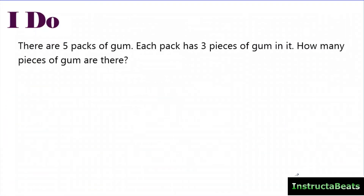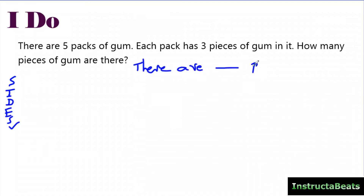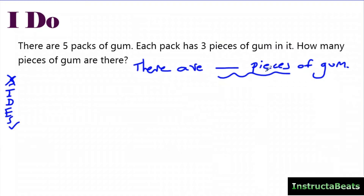Let's take a look at an 'I Do' problem so you can see this in action. We are going to be doing our size check strategy. My question asks, 'How many pieces of gum are there?' So my statement is going to say, 'There are blank pieces of gum.' Your statement identifies what's important in the word problem. My question is asking about pieces of gum, so I'm looking for anything about pieces of gum. I'm going to circle five packs of gum — not just because it's a number, but because that's about gum and my statement is asking about gum.